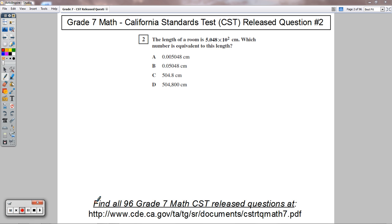Welcome to Wagner Academy. Let's take a look at question number two for our grade seven math questions. It says the length of a room is 5.048 times 10 squared centimeters. Which number is equivalent to this length?